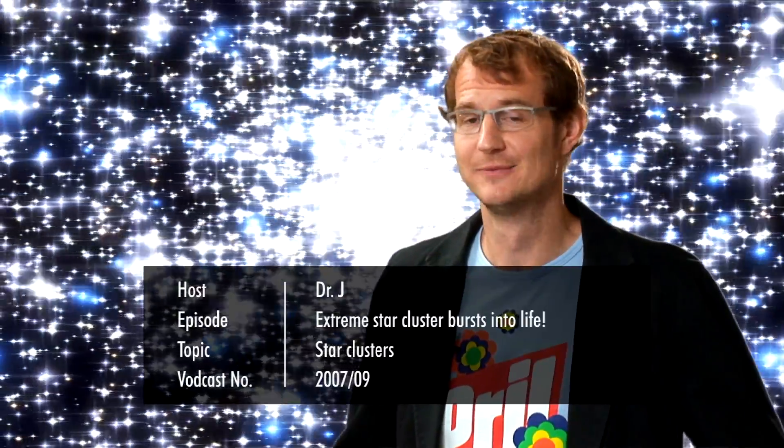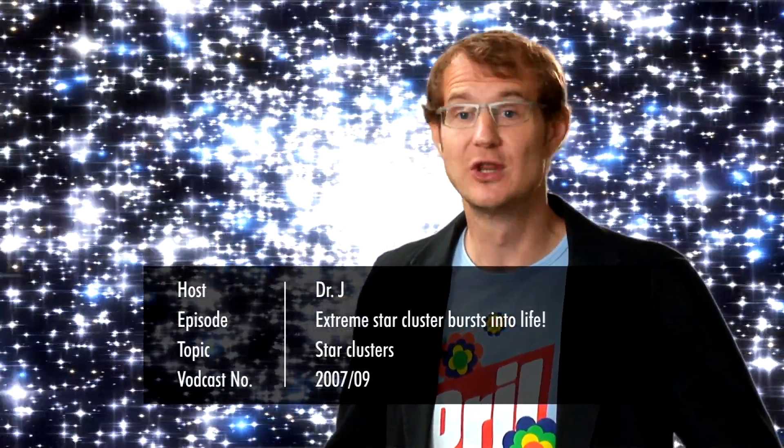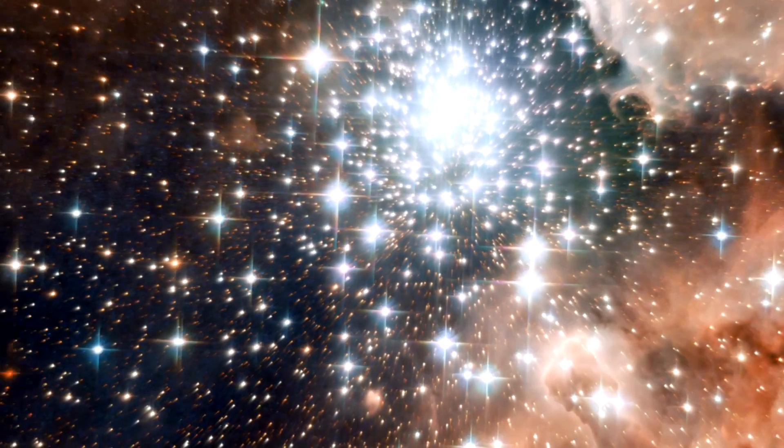Welcome to the Hubblecast. Today we are going to travel to the heart of a massive cluster of young stars that lies deep inside a vast nebula of gas and dust. The nebula is called NGC 3603 and it is located about 20,000 light-years from Earth in the Carina spiral arm of our own Milky Way galaxy.